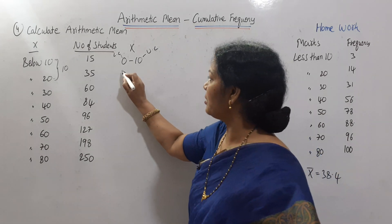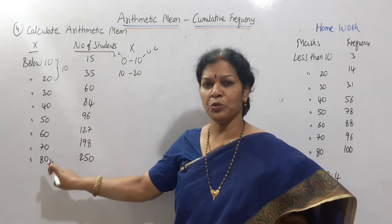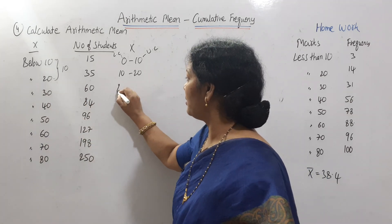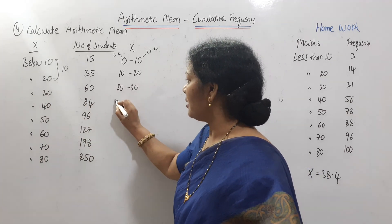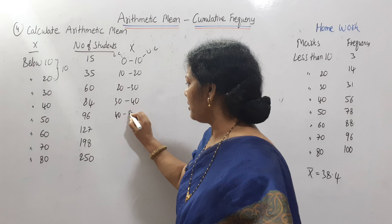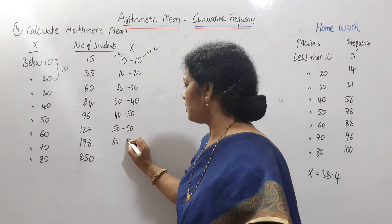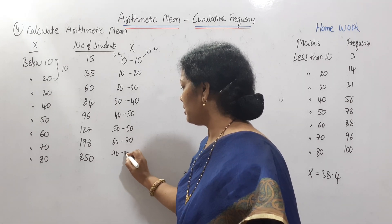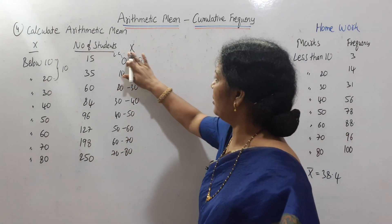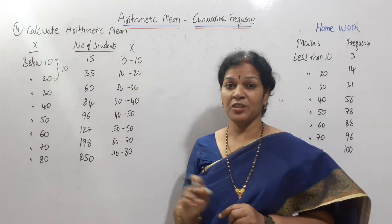It is 10 to 20. We can do the lower class interval. Now, 30 minus 10 is 20, giving 20 to 30. Then 40 minus 10 is 30, giving 30 to 40. So let's rearrange the class intervals: 50 to 60, 60 to 70, 70 to 80. We will arrange the class intervals at the beginning. The frequency is also in ascending order.